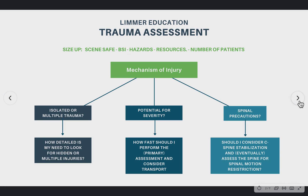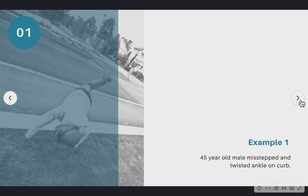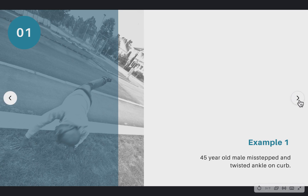To illustrate this, we've put together two patients: a patient that has an apparent isolated injury and a patient that has a more potentially serious injury. The first example is a 45-year-old male. He misstepped and twisted his ankle on the curb. These calls are much more common than the multiple traumas are, so it's very important that we think about these because this is really what we see.